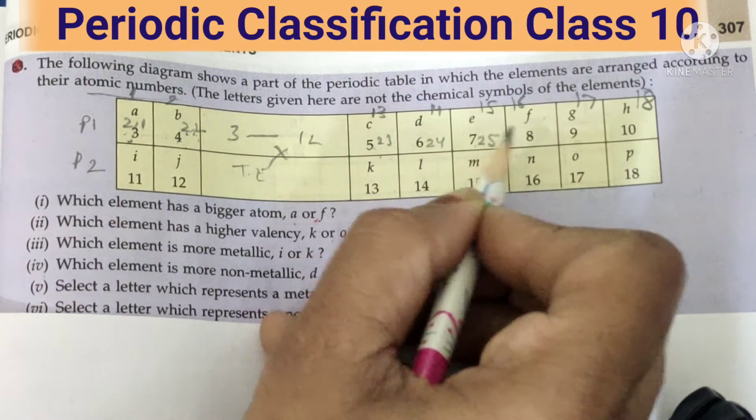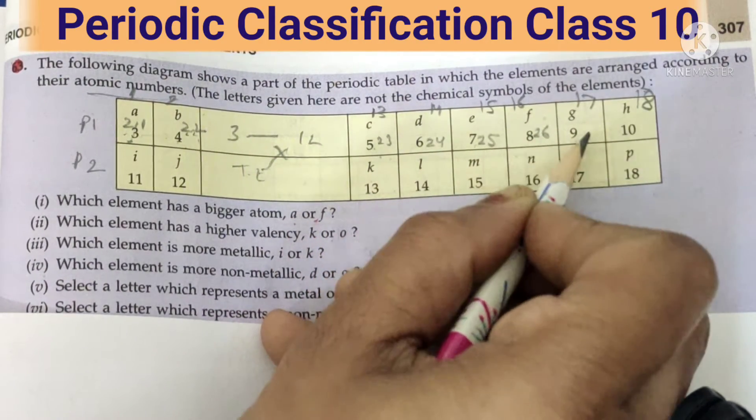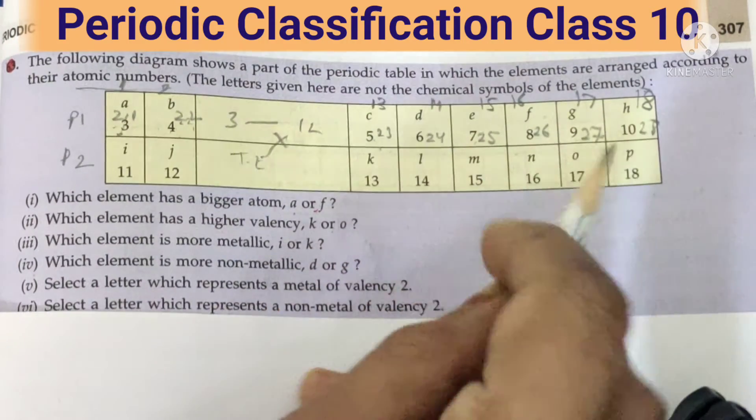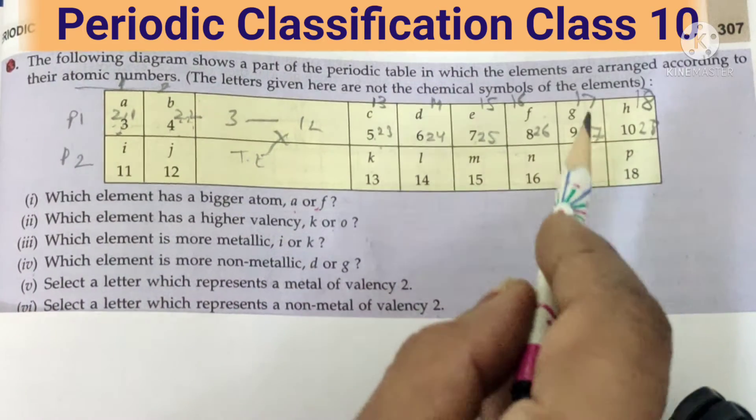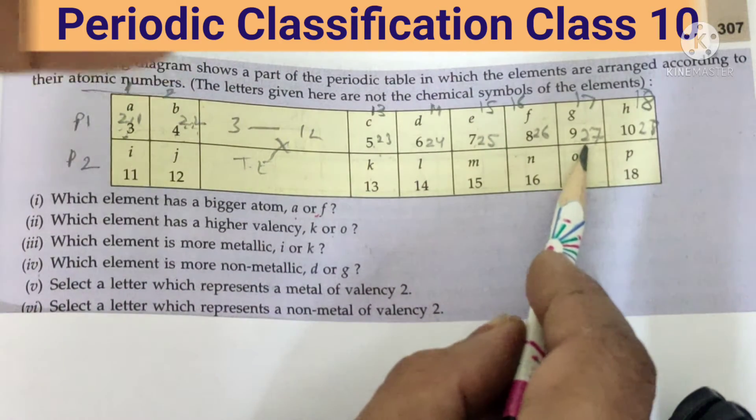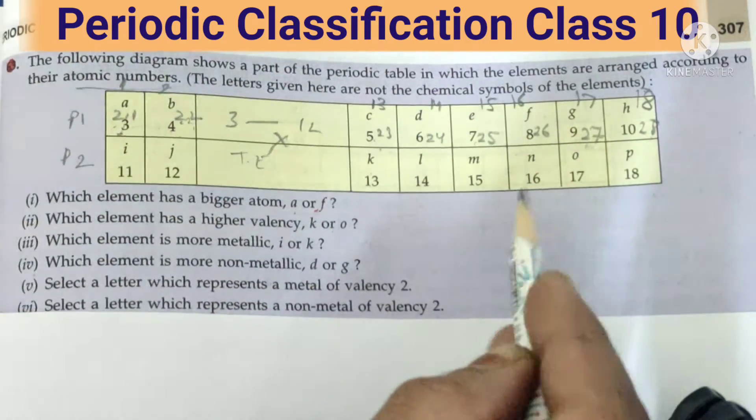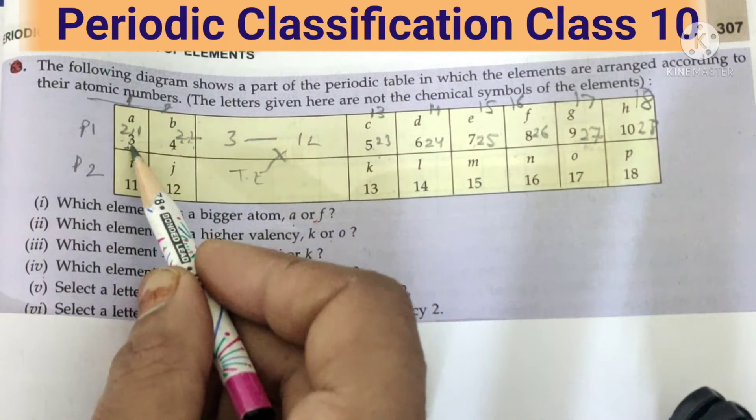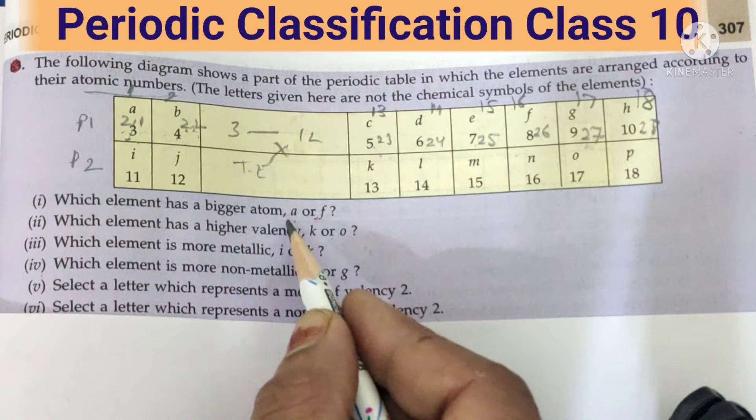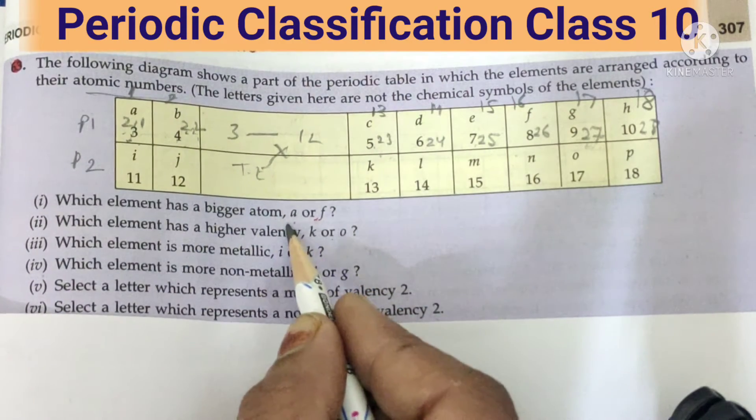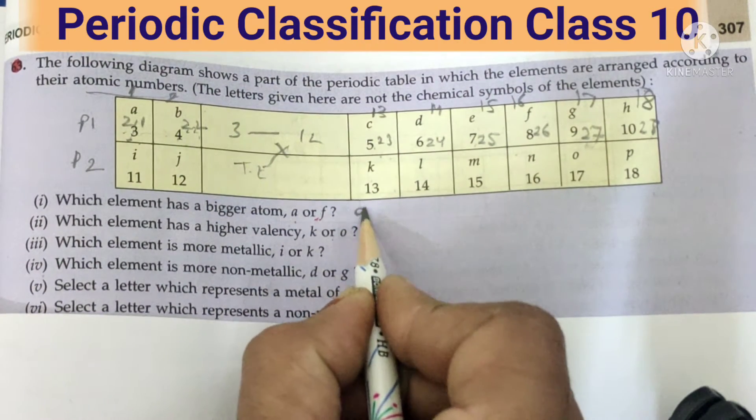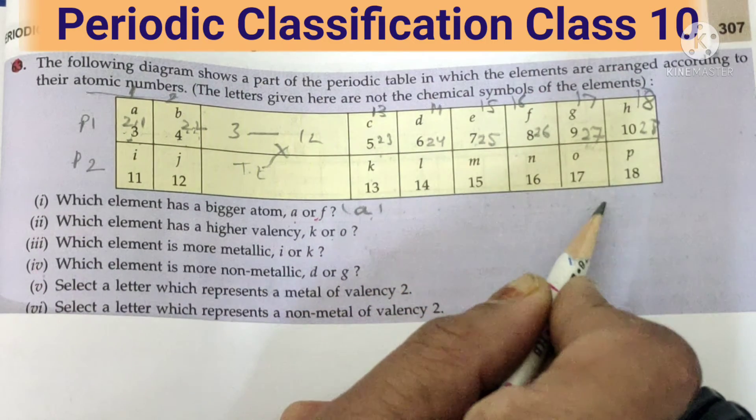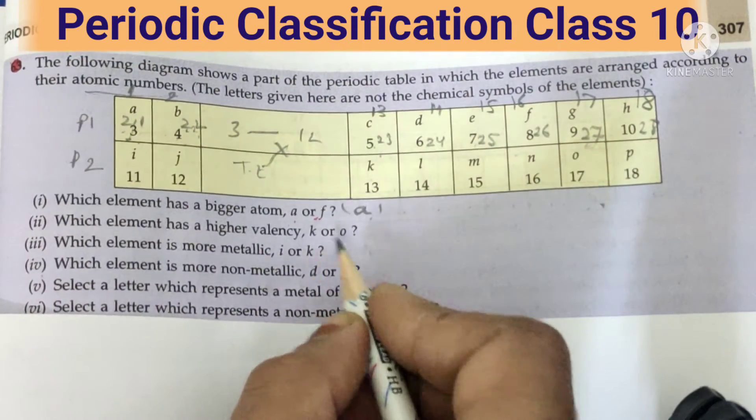This is two five, this is two six, this is two seven, and last is two eight. So who has the most electrons? This one, they have small size. Why? Because more electrons that means more compact. Whereas this has less electrons, so the size is bigger. So the answer of the first one, which element has bigger atom? Answer is A. A has bigger atom because less electrons are there in the outermost shell.